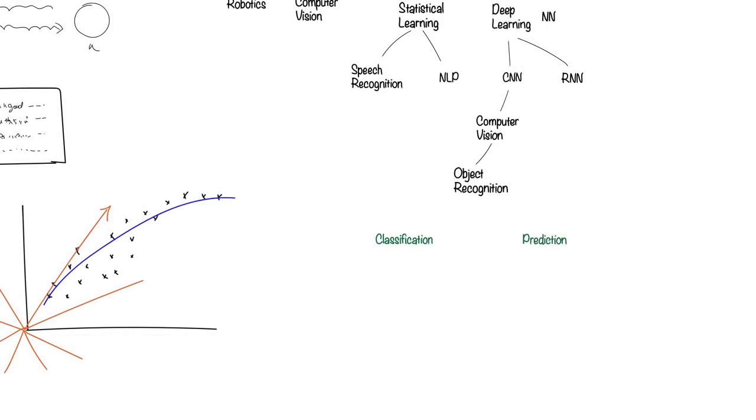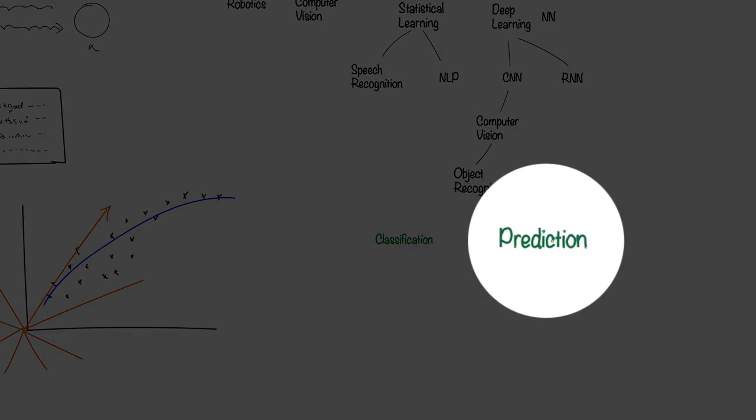If you use data to predict if they are likely to defect to a competitor, then you are making a prediction.